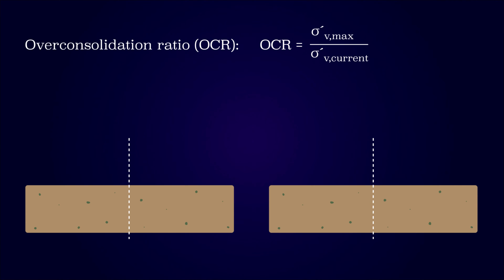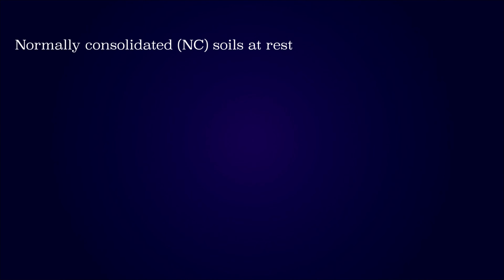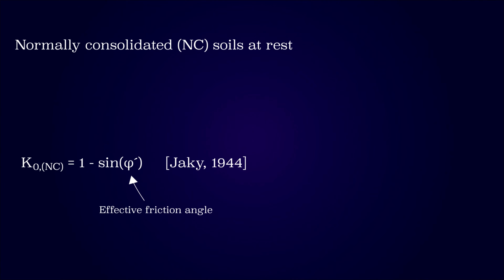Soils that have not previously experienced a larger effective vertical stress than now are referred to as normally consolidated soils. Soils that have experienced a larger effective vertical stress than now are referred to as overconsolidated. This large previously experienced stress could be due to erosion of overlying soil layers or a melting glacier. For normally consolidated soils, the earth pressure coefficient at rest is usually determined by the recognized Jaky formula, which is based on both analytical and experimental work and is valid for both sand and clay soils.